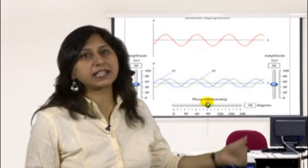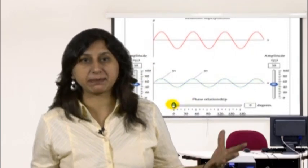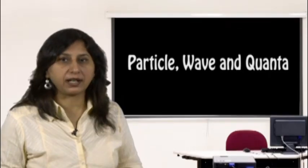Particle, wave and quanta: if we randomly shoot marbles at a screen with a single slit, we see a single band pattern at the back wall. Adding a second slit, we expect two bands duplicated. Now looking at waves: the waves hit the slit and radiate out, striking the back wall with most intensity directly in line with the slit — similar to the marble pattern.